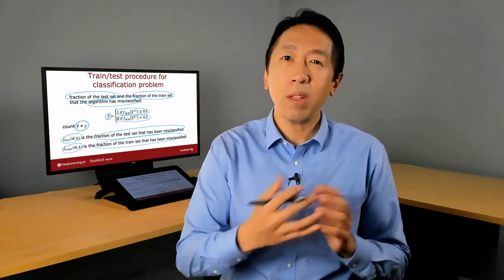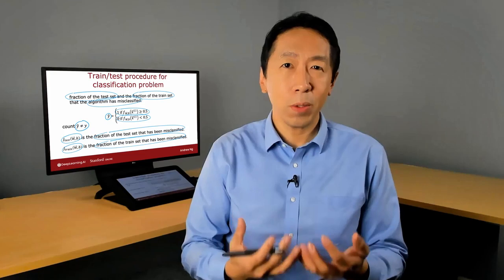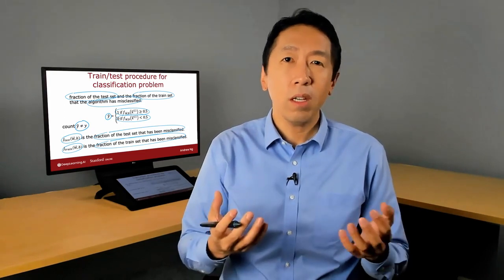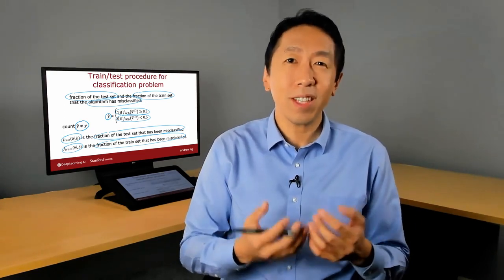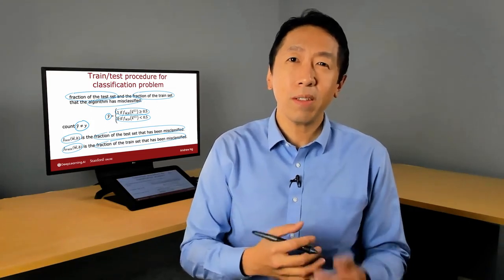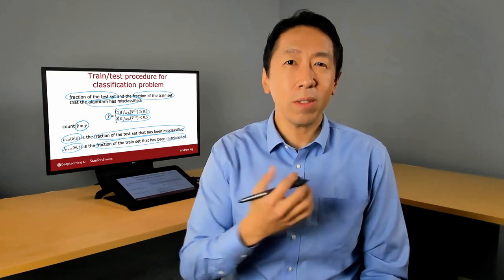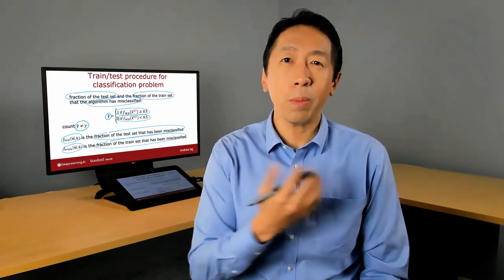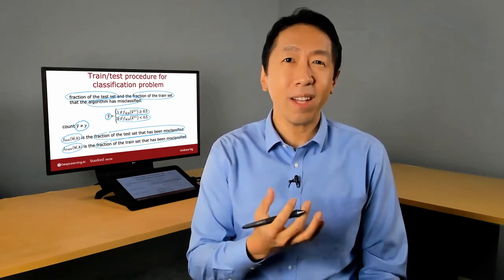This procedure is one step to what you'll be able to automatically choose what model to use for a given machine learning application. For example, if you're trying to predict housing prices, should you fit a straight line to your data or fit a second-order polynomial or third-order or fourth-order polynomial? It turns out that with one further refinement to the idea you saw in this video, you'll be able to have an algorithm help you to automatically make that type of decision well. Let's take a look at how to do that in the next video.